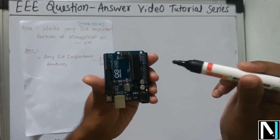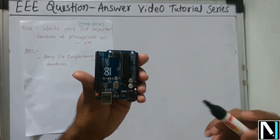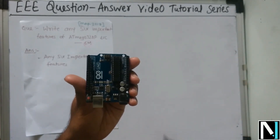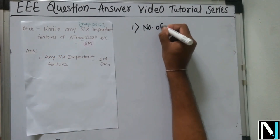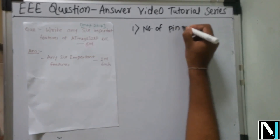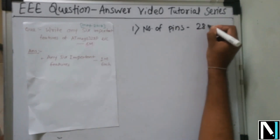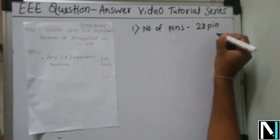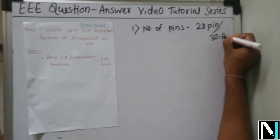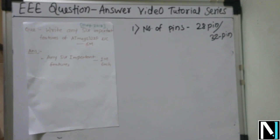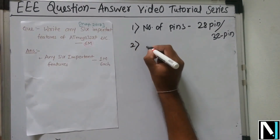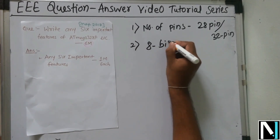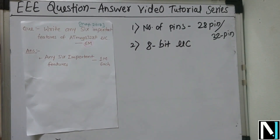Looking at the external features first: number one, it is a 28-pin IC, which is also available in a 32-pin package. Number two, it is an 8-bit microcontroller, meaning all operations are performed on 8 bits of data.